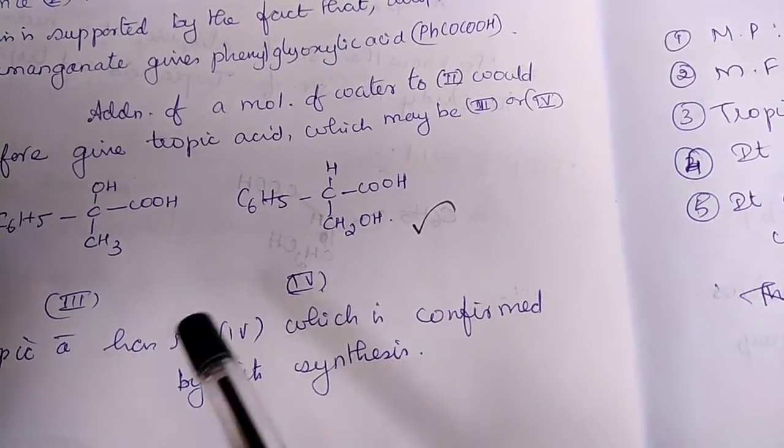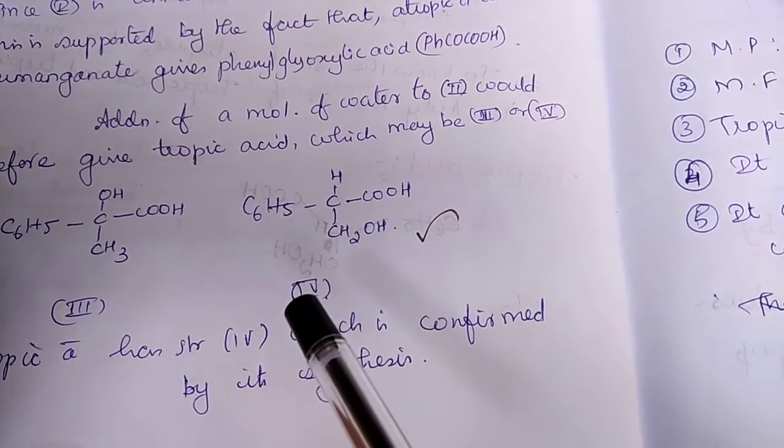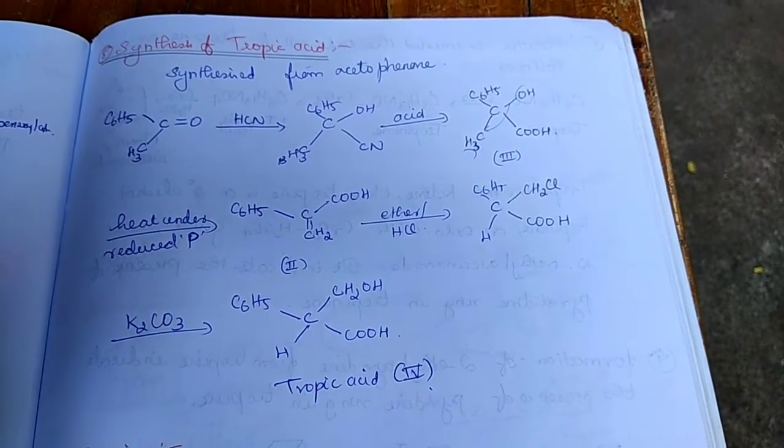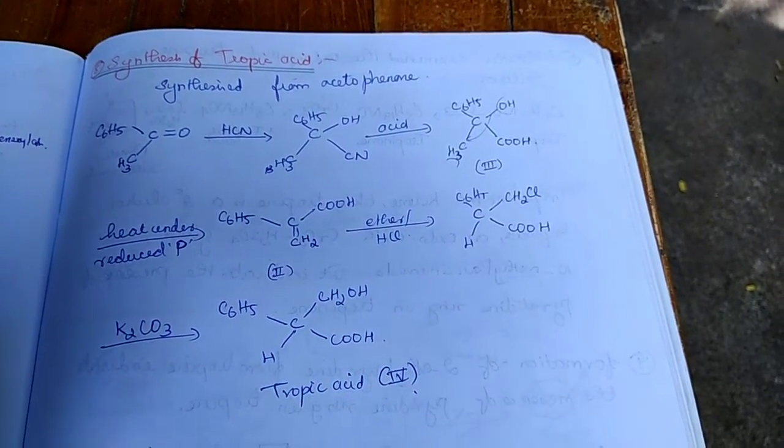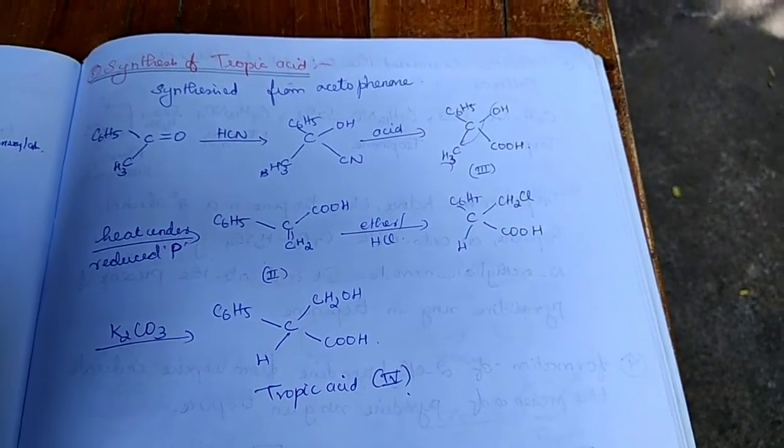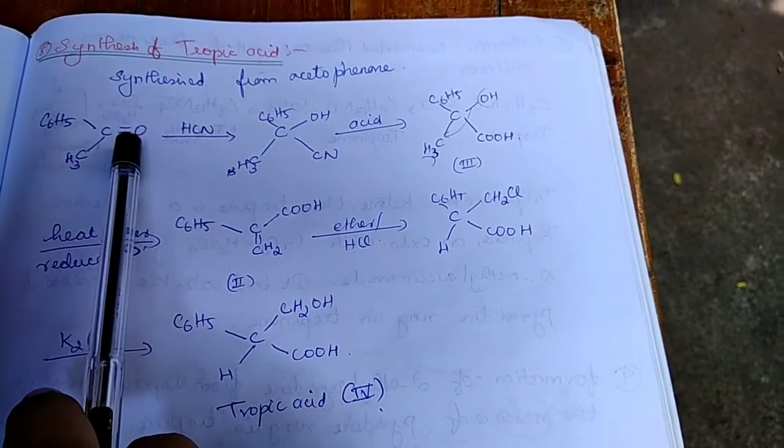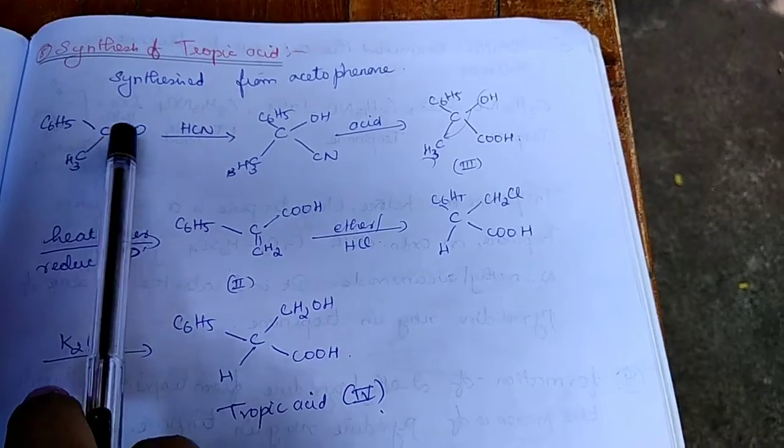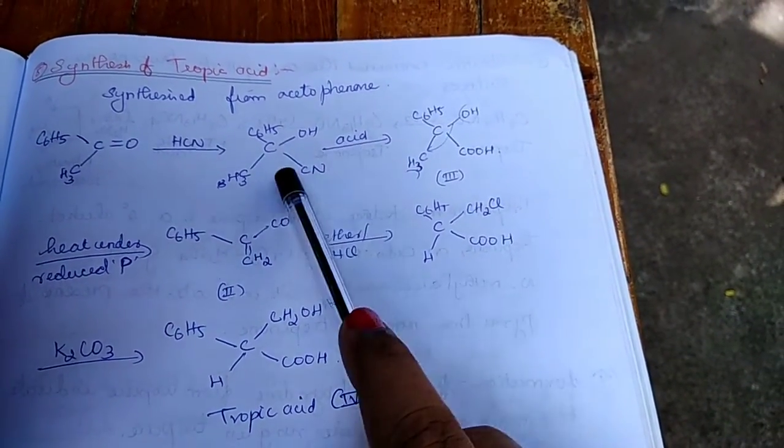And the structure of tropic acid is confirmed by its synthesis. The synthesis of tropic acid is from acetophenone. Acetophenone with HCN, it adds to the double bond O group as OH and CN. Again treating this with an acid, we get OH and COOH.